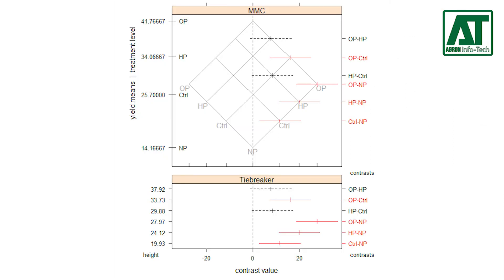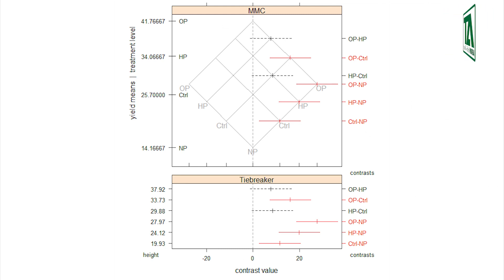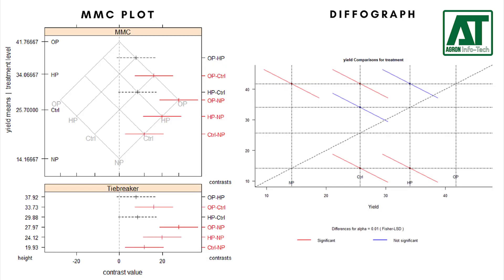A mean scatter plot, or MMC plot, shows a two-dimensional representation of the differences between many means. The MMC scatter plot is different from the Defo graph; however, both provide the same information.